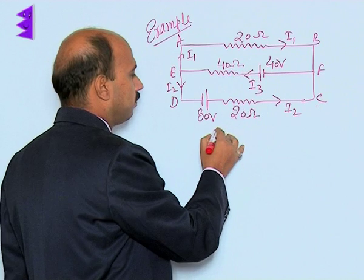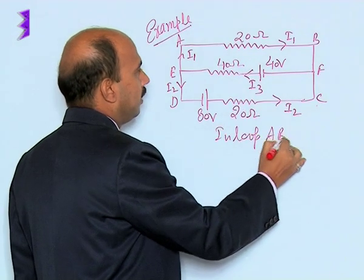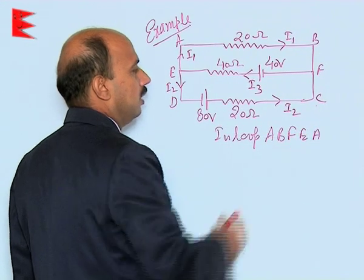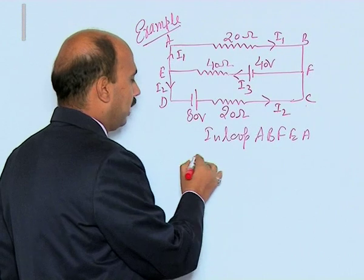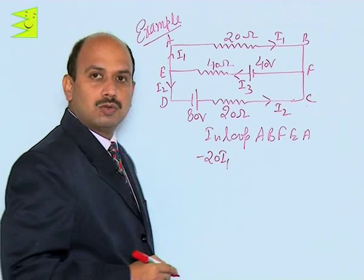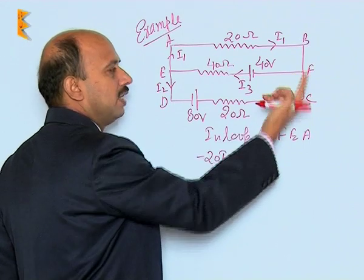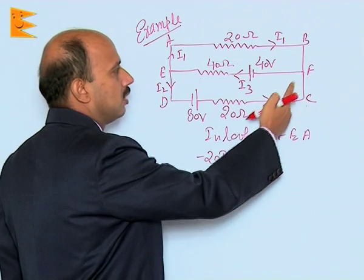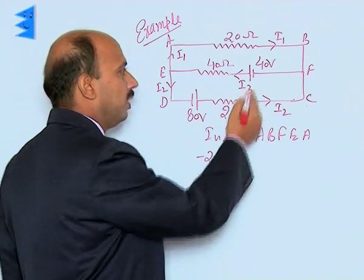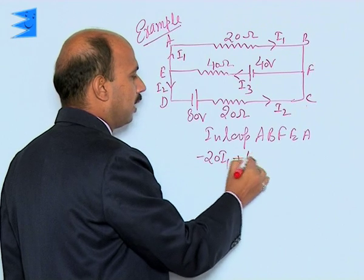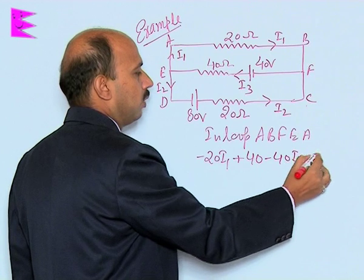First one, we can take the loop A B F E A, that is clockwise from A to B. When we go, we can write minus 20 I1 because higher potential to low potential in the direction of current. B to F there is no any element. F to E, we can write there is the battery, the cell of 40 volts. We are going from low to higher, so we can write plus 40.